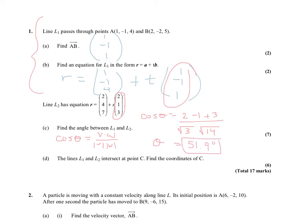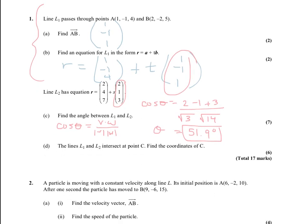So whenever we're finding the angle between two lines, we want to make sure we're using the direction vector, not the position vector. Okay, then it says that the lines intersect at a point C. Find the coordinates.